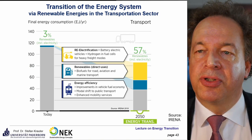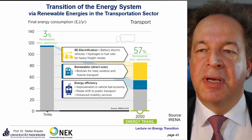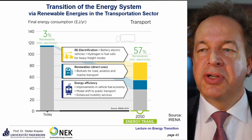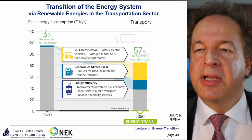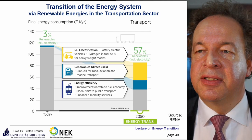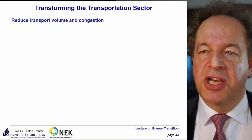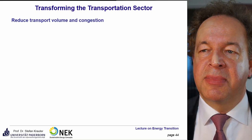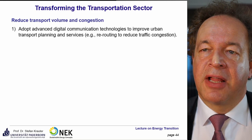In the transportation sector — currently almost entirely fossil fueled — the train system is the largest electrified share. The car industry should transition to electric vehicles. Efficiency-wise, electric cars achieve about 80% efficiency (battery plus motor) versus about 30% for fossil fuel cars. Other measures include reducing unnecessary transport volume — sometimes transporting goods is cheaper than storing them, which is environmentally disastrous.